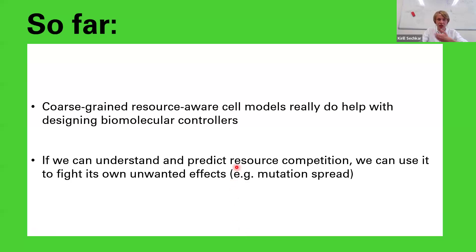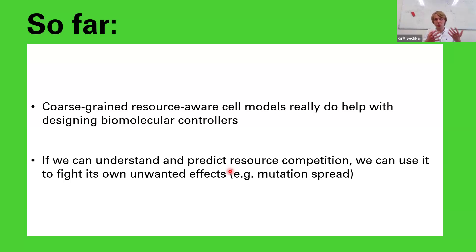In this case study, we have shown how coarse-grained resource-aware cell models can help with designing biological controllers with quite unorthodox effects. More broadly, we have seen how leveraging resource competition — for example, the dependence of the Punisher state on burden — can actually help us mitigate some of the unwanted effects of resource competition, like mutation spread.